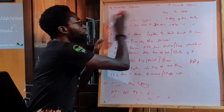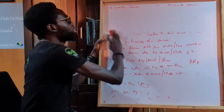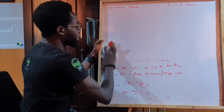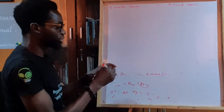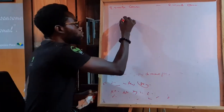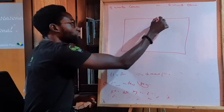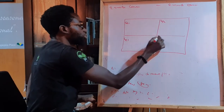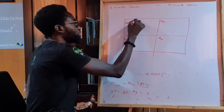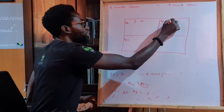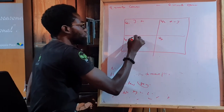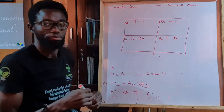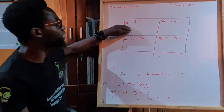Once you have done that, you can now draw what we call the four quarter canvas. The four quarter canvas is simply four quadrants: Q1, Q2, Q3, Q4 — that is January to March, April to June, July to September, then October to December.